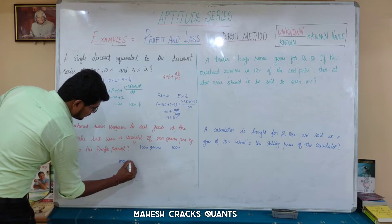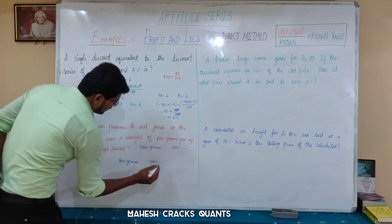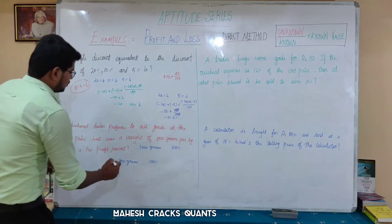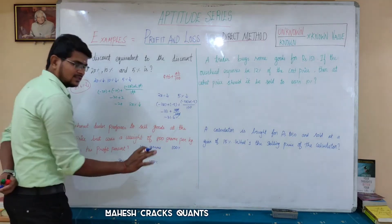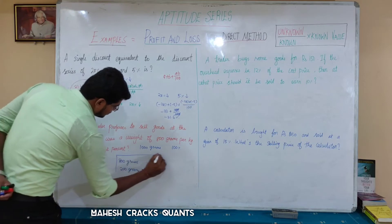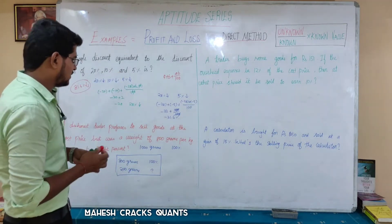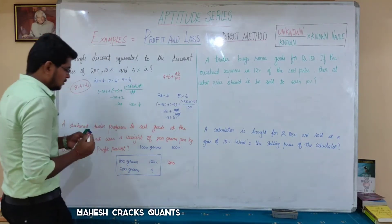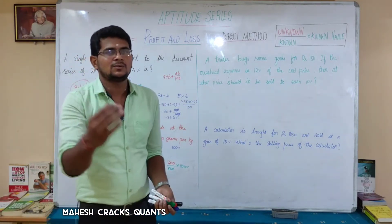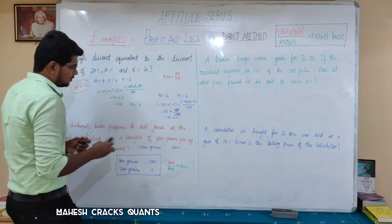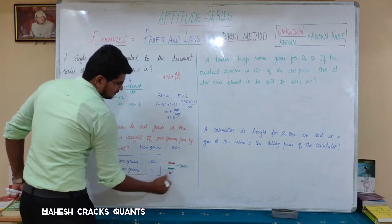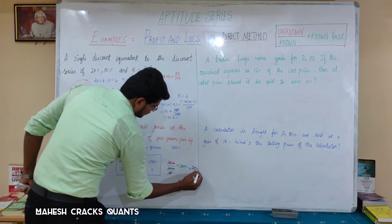The price is 100% for 800 grams. Since 1000 grams is the actual kilogram, the dealer gains 200 extra grams. So 200 divided by 800 — cancelling gives 1 divided by 4, which is 25%. Therefore, the profit percentage is 25%.